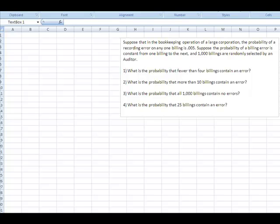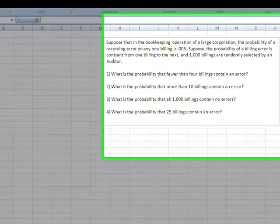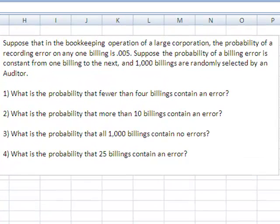In this case, you have a probability of a recording error on a billing of 0.005, which is extremely small. The other thing is that the problem says the probability of a billing error is constant from one billing to the next. That's one of the other characteristics of a Poisson, is that the expected number of occurrences has to hold constant from one event to the other inside of the experiment.